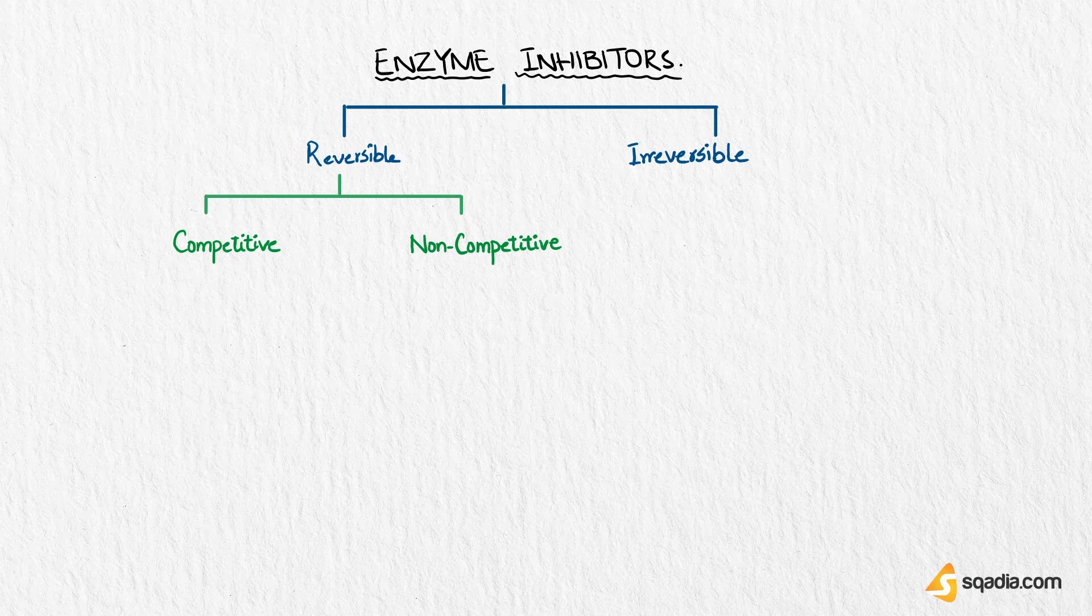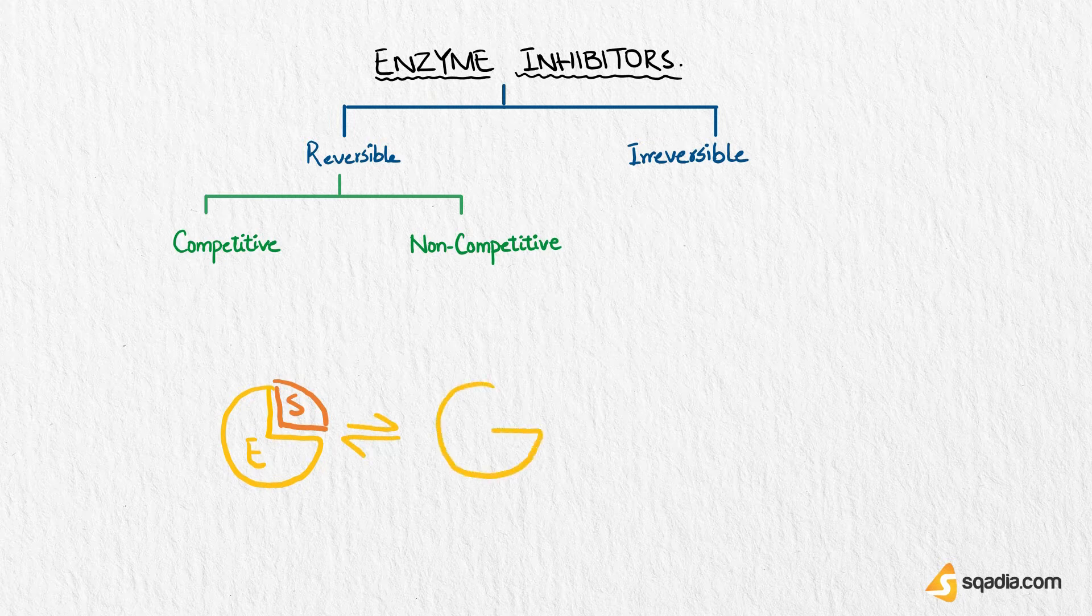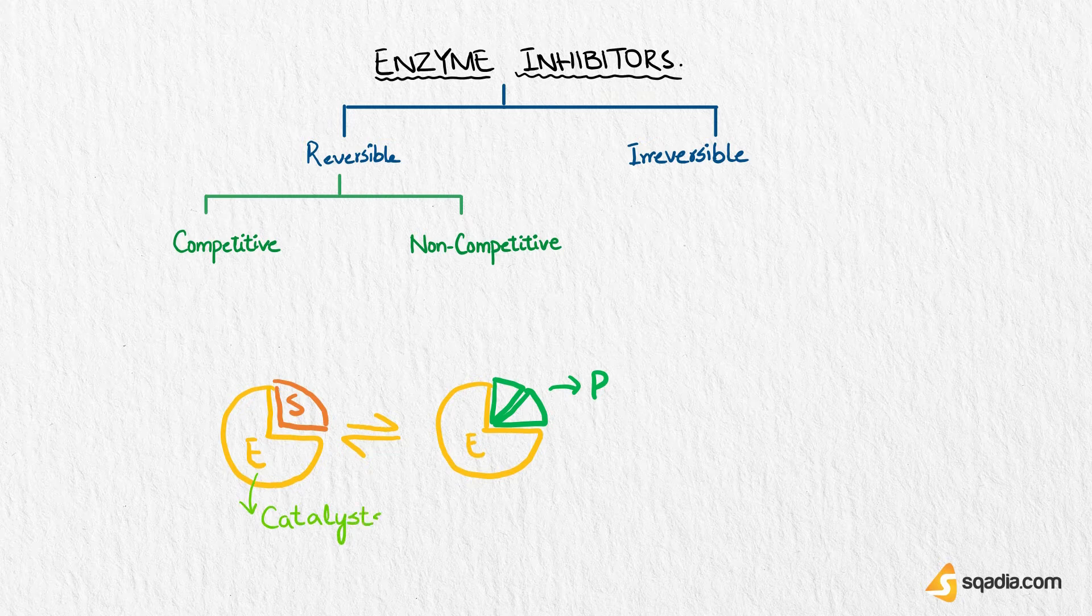Now let's understand how they work. Now in our basic understanding of an enzyme reaction, enzymes take substrate and they convert it into product. They are catalysts, which means that they catalyze reactions. Both types of inhibitors have the same exact goal,